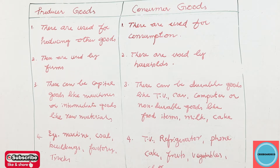Consumer goods can be durable goods — what you are using at home like TV, car, computer — durable means you can use it for a longer time. Or non-durable goods, also called single-use consumer goods, like milk, cake, chocolates, fruits, vegetables — whatever you are eating at home.